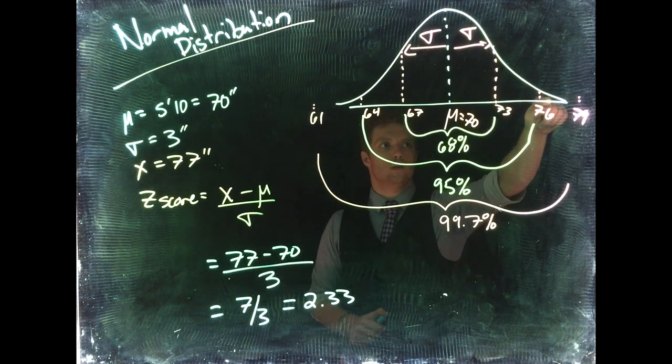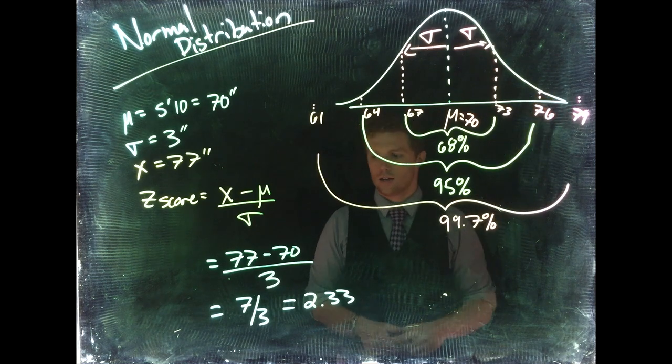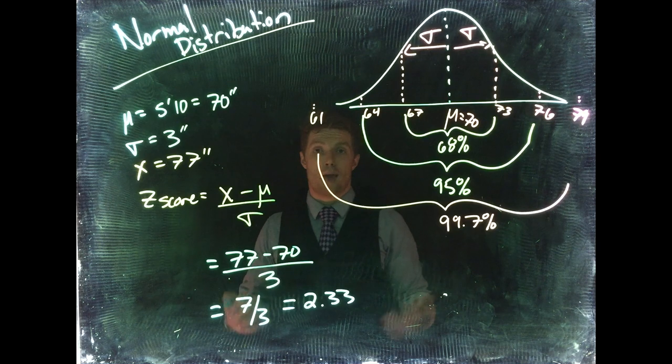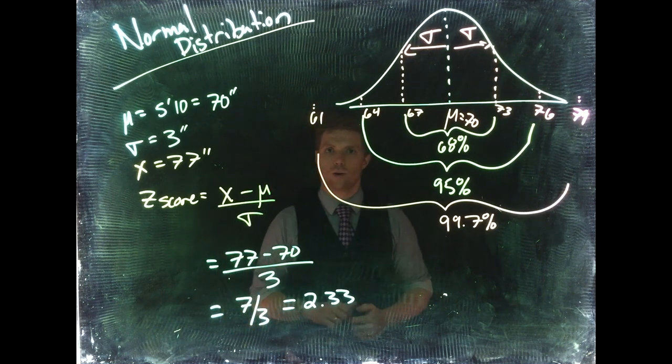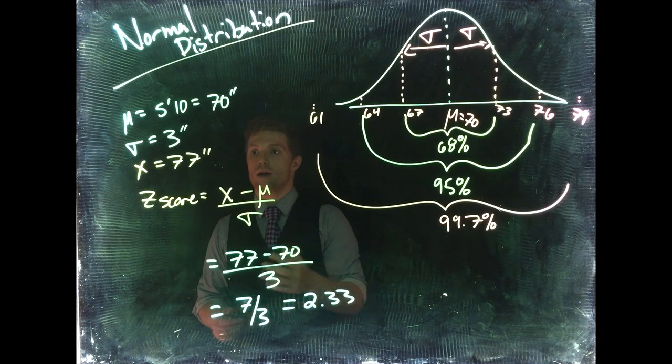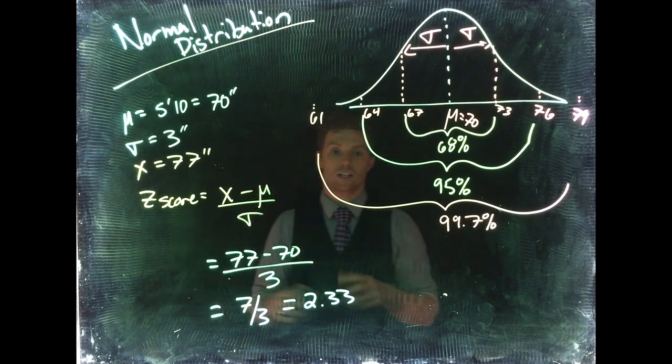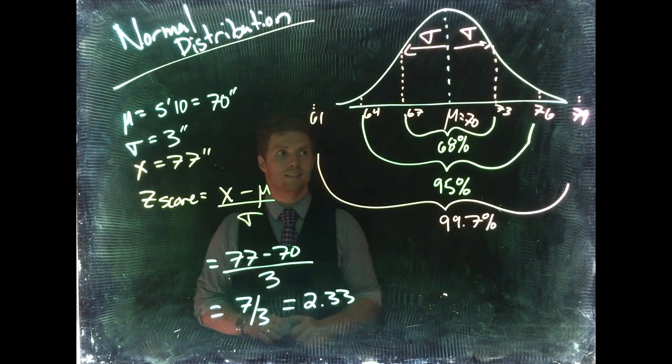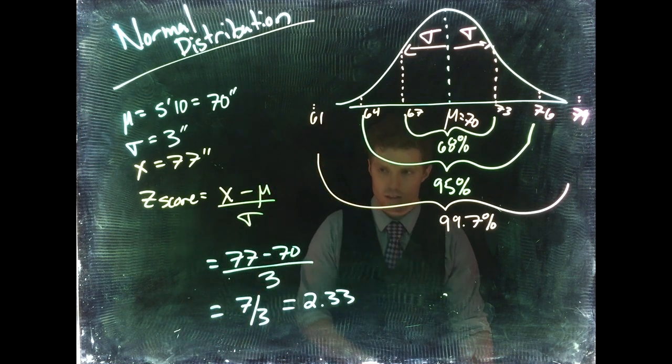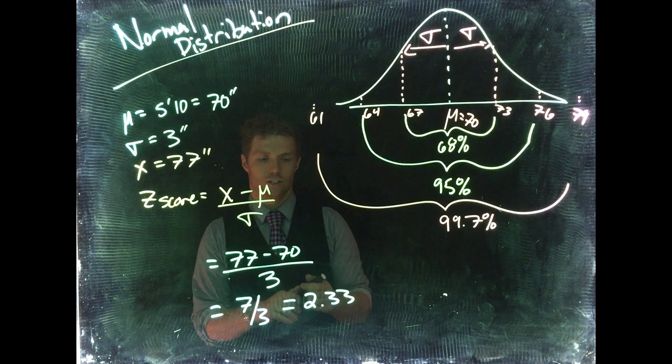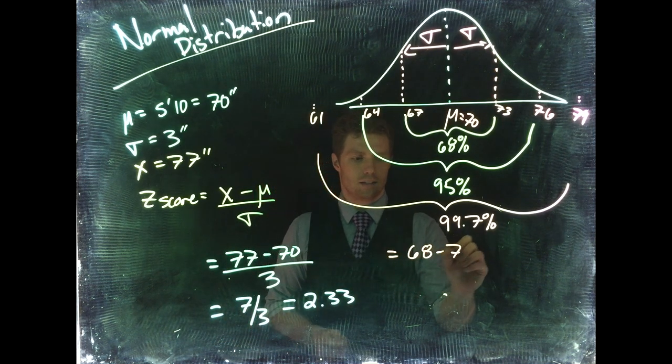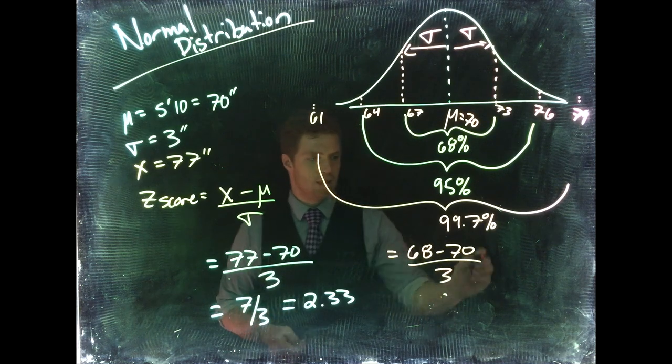So he's over 2 standard deviations away: 1, 2, and just a little bit more. And we see that he's pretty rare. Once you get past about 2 standard deviations away from the mean, we start having a strange occurrence. So we could compare, okay, is being 77 inches or is being 68 inches a more weird event? So let's take a shorter guy, 68 inches, and let's do the same thing.